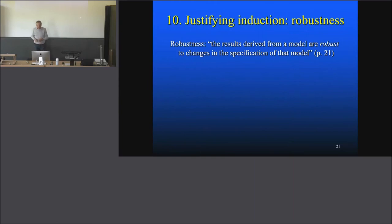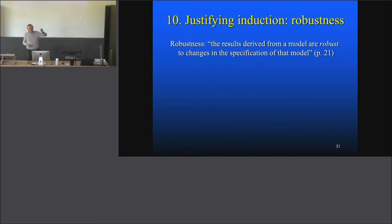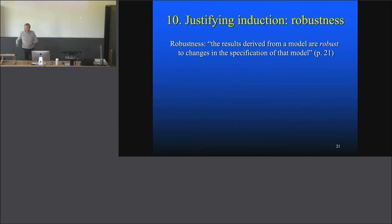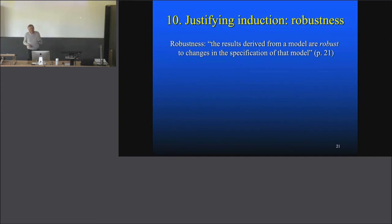Here's another attempt: so-called robustness. Everyone who works with models knows that robustness is a fundamental ingredient. The results derived from a model are robust if you change the specification of that model — you may play around with certain parameters, and the main results of the model must be stable against that. You play around with stuff that's supposed to be inessential, and the result of what the model does should not be affected. That's robustness analysis. But there are really disagreements in philosophy of science about what robustness analysis is really doing.